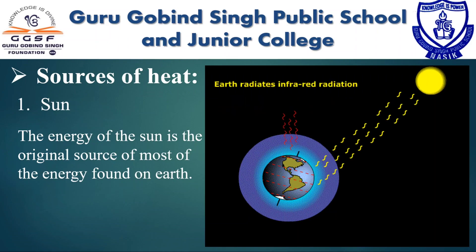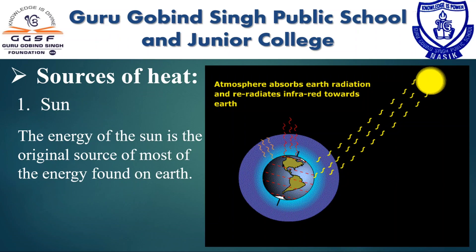The first source is the Sun. The energy of the Sun is the original source of most of the energy found on Earth. We get solar heat energy from the Sun, and sunlight can also be used to produce electricity from solar cells. The Sun generates energy from a process called nuclear fusion. During nuclear fusion, the high pressure and temperature in the Sun's core cause nuclei to separate from their electrons. Hydrogen nuclei fuse to form one helium atom, and during this fusion process radiant energy is released.